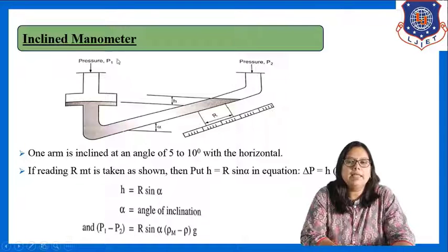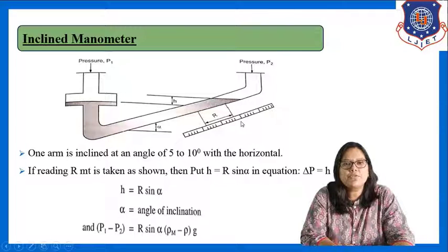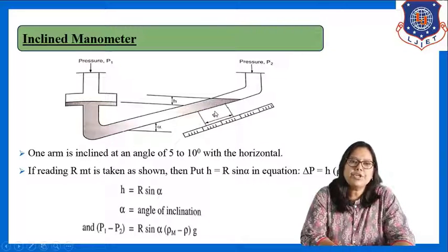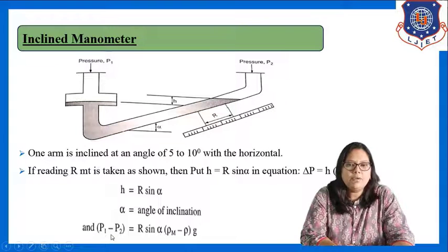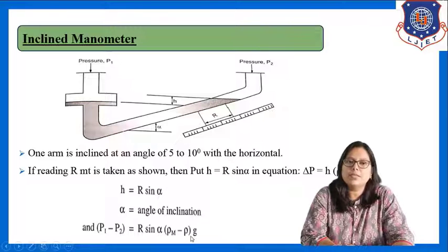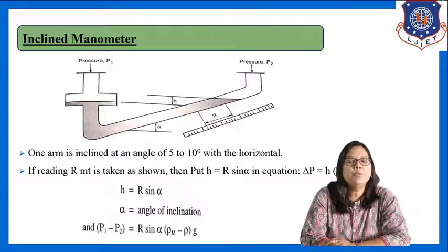In the inclined manometer, one leg is inclined at angle alpha with the horizontal. The height h, which you measure using the scale, is expressed in the form of r. So in the equation of the U-tube manometer, we replace h with r·sin(alpha). The final equation for pressure difference in the case of the inclined manometer is: P1 − P2 = r·sin(alpha)·(rho_m − rho)·g.